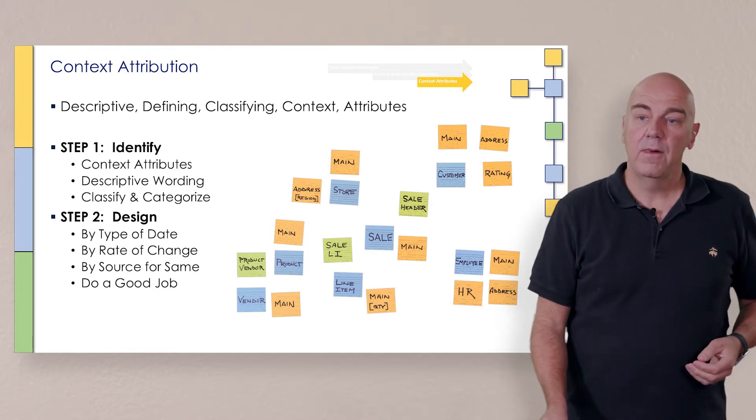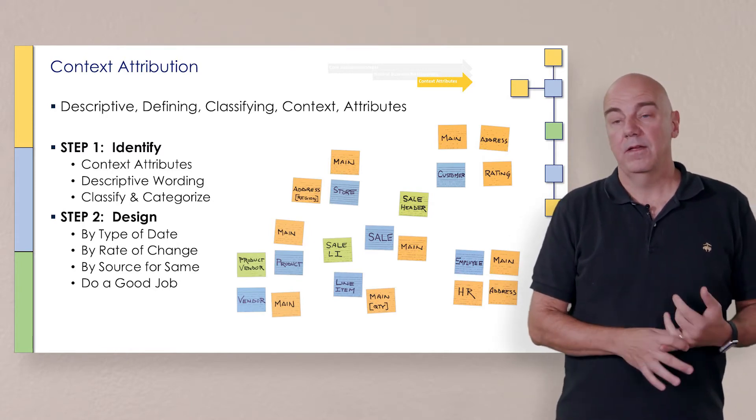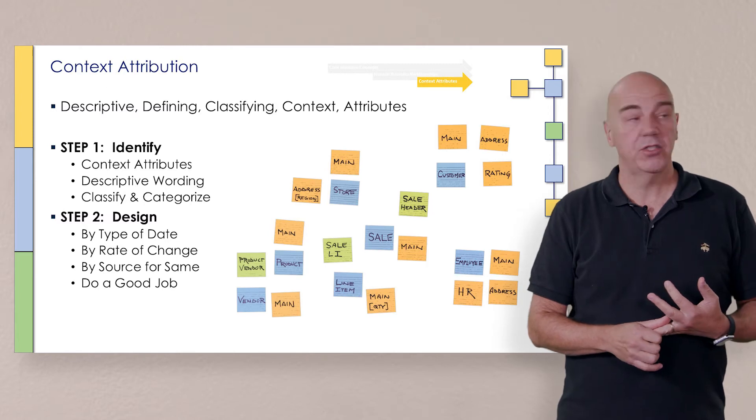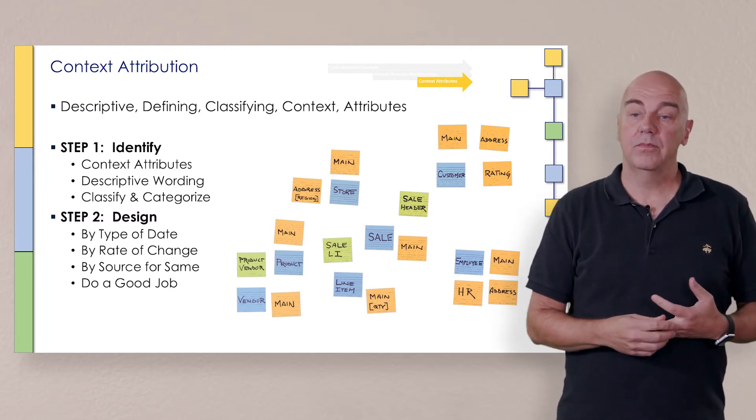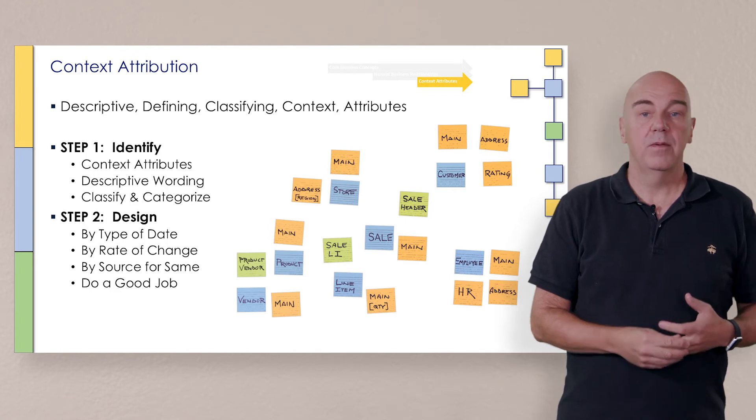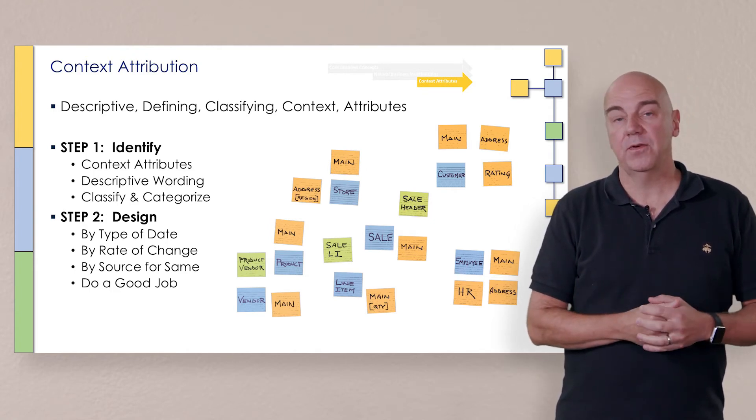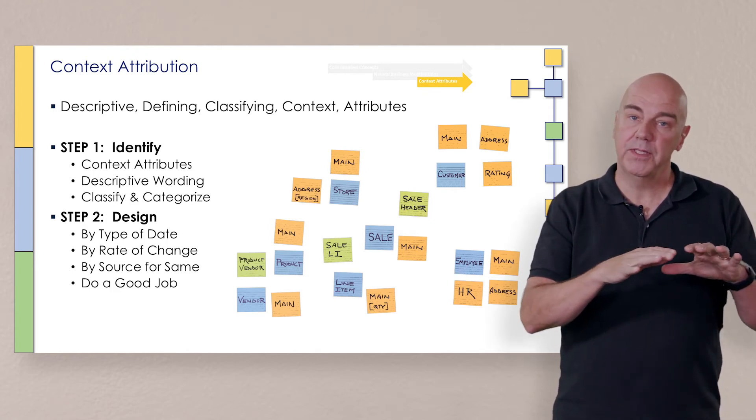We do design satellites by the type of data, by the rate of change. Things that change very frequently, like ratings, source for some. But the overall best practice for how we design satellites, how we split up the context attributes, is to do a good job.